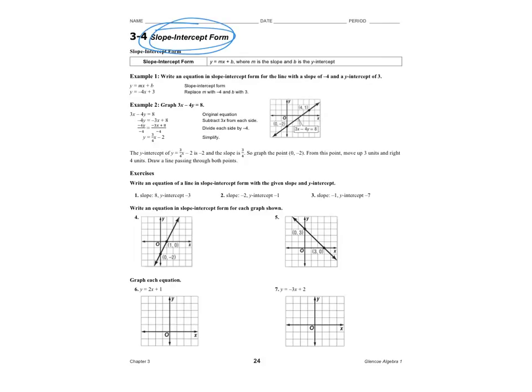We've seen standard form a few days ago where x and y are on the same side. Slope intercept form still has just three terms, but we have our equation already solved for y. So y equals mx plus b. Only two things to note here. Remember, little letter m from the alphabet was slope or rate of change. That number goes right there with our x variable. b is our y intercept. So let's do some things with this.